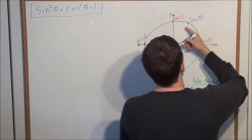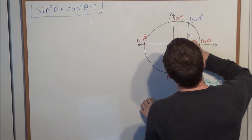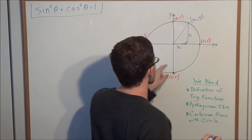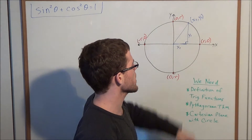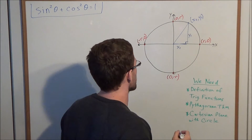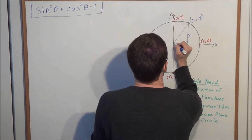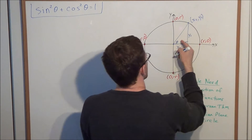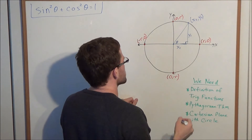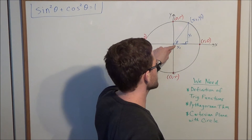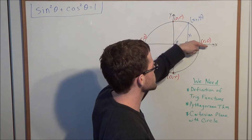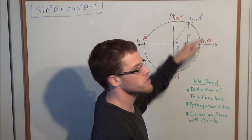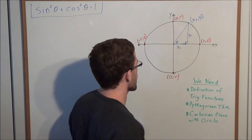So now let's go ahead and connect these two points — connecting the origin to the point (x₁, y₁). We'll call this angle right here theta. This angle is created using the x-axis and the segment connecting the origin to the point (x₁, y₁).